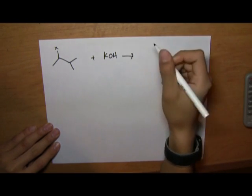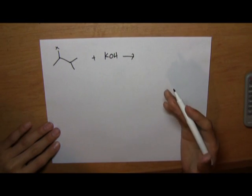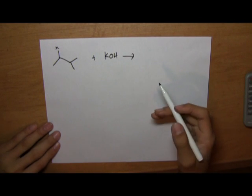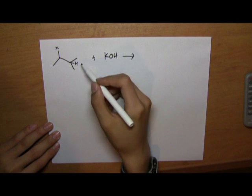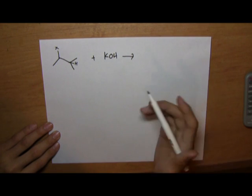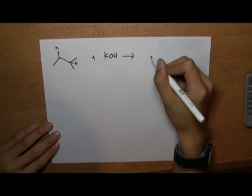KOH, as we all know, is a small, unhindered but strong base. And so KOH would most rather take this hydrogen here, because it creates the most substituted product. So the product of this would be this.